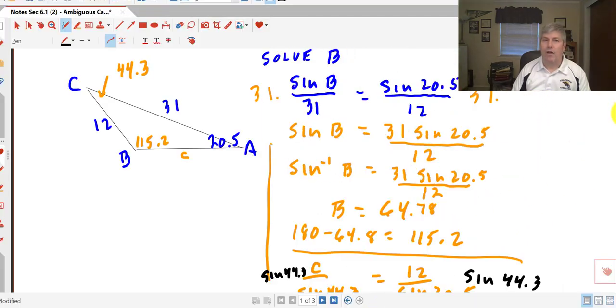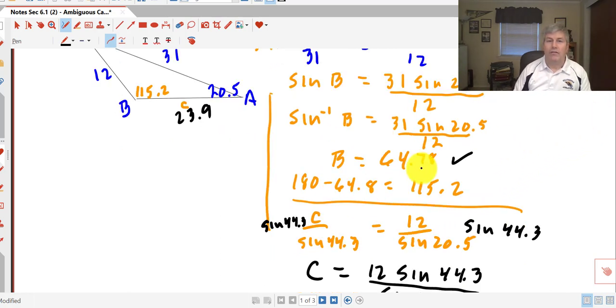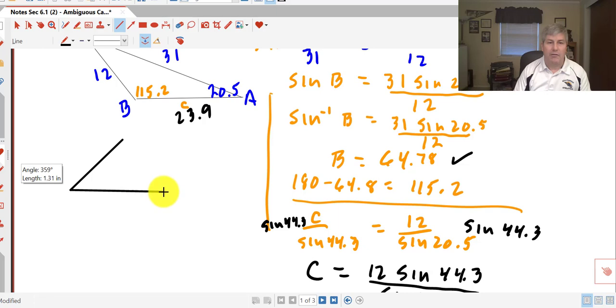We get side C is 23.9 meters. So we have solved for one possibility of that triangle. Does that make sense? It looks like our smallest side is opposite the smallest angle, the medium side is opposite the medium angle, and the large side is opposite the large angle. But remember, one possibility for angle B was 64.8°.